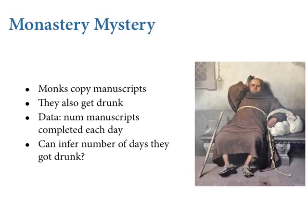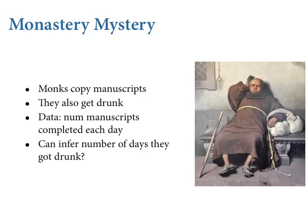Monks copy manuscripts, but the problem is they have cellars full of delicious cider, so they also get drunk and throw wild parties sometimes during the week — and this is all true from the historical period. The outcome variable of interest is the number of manuscripts completed on each day. There's a logbook where completed manuscripts are recorded. It's a count, and this will be a Poisson variable, because on many days no manuscripts are completed — it takes a number of days by hand to complete a 400-page illuminated manuscript.